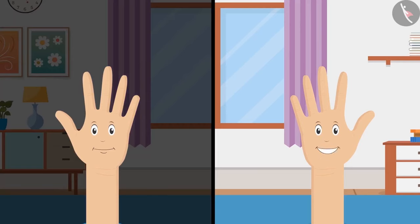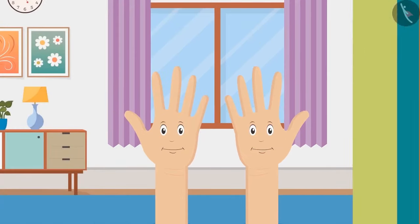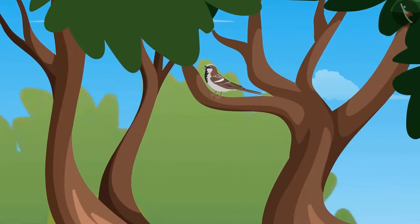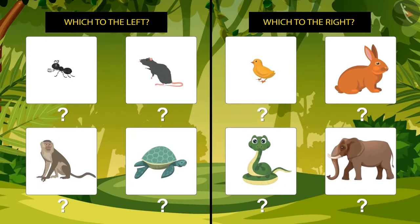Let's do an activity. We met a lot of different animals in chapter one. Come on, let's look at them again. Now identify which of these animals lie to the left.